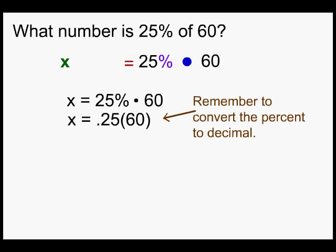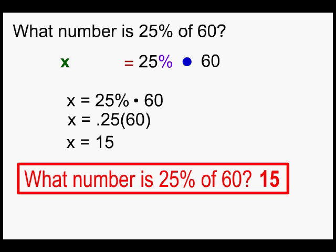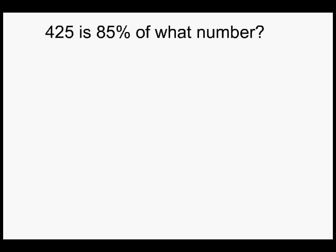But we need to remember to convert the percent to a decimal before we can multiply. When we multiply we get 15. So what number is 25 percent of 60? 15. Let's look at the next example.